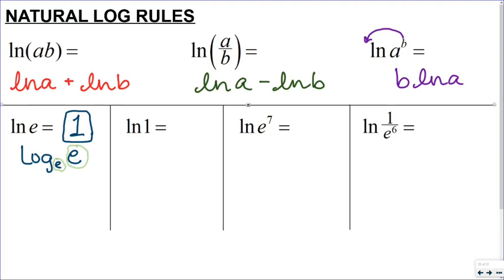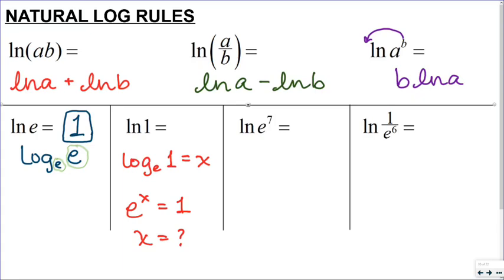The natural log of 1 — think about what this is asking. It's asking: what power do I have to raise e to in order to get 1? In other words, e to the x equals 1 — what is x? That is 0, because anything raised to the 0 power is 1.